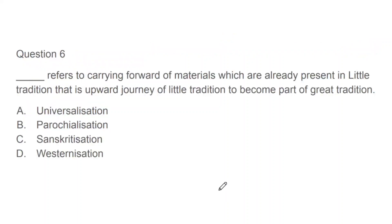Question 6: Dash refers to carrying forward of material already present in little tradition — the upward journey of little tradition to become part of great tradition. When any aspect of culture that is part of little tradition, like a ritual, moves upward to become part of great tradition, what do we call this? Options: universalization, parochialization, sanskritization, westernization. Just remember: little tradition going to great tradition. The correct answer is universalization. Both universalization and parochialization concepts were given to us by McKim Marriott. I will teach this on my channel as it is a very important topic.